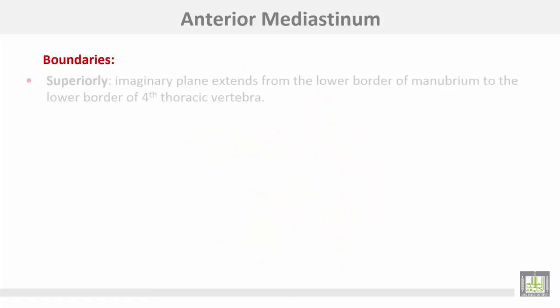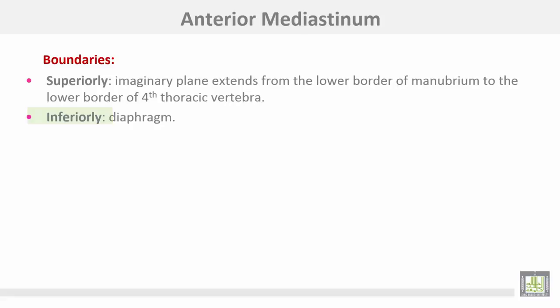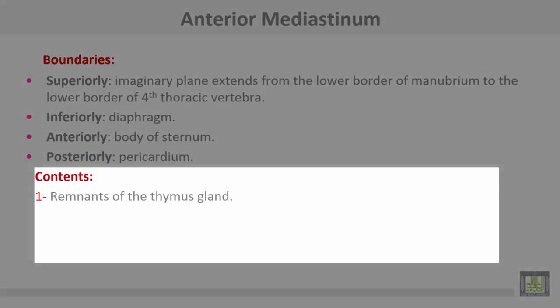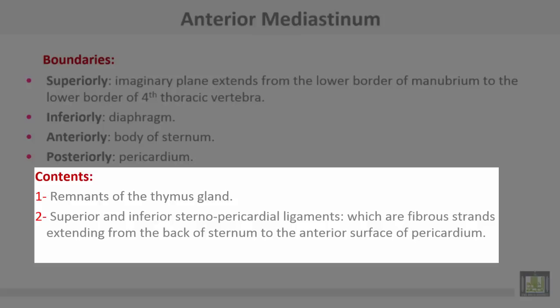The anterior mediastinum is bounded superiorly by the same boundary as the inferior border of the superior mediastinum — an imaginary plane from the lower border of the manubrium to the lower border of the fourth thoracic vertebra. Inferiorly, it is bounded by the diaphragm, anteriorly by the body of the sternum, and posteriorly by the pericardium. The contents of the anterior mediastinum include remnants of the thymus gland, superior and inferior sternopericardial ligaments, which are fibrous strands extending from the back of the sternum to the anterior surface of the pericardium, and the sternocostalis muscles.